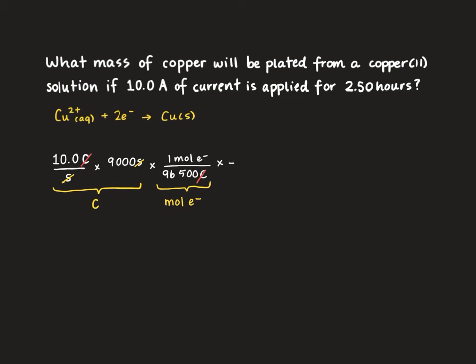Next step is going to be to convert that into moles of copper. Because we're interested in the mass of copper we need to get to moles of copper. So we know that for every one mole of copper that we form, two moles of electrons have been gained. So that's from our half reaction. At this stage we've now solved for the moles of copper.